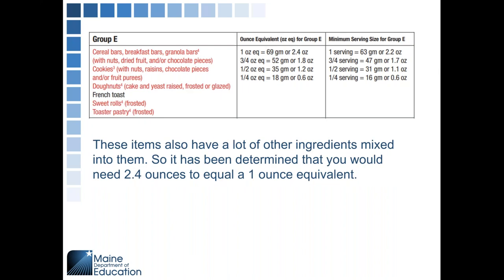Group E is next. These are cereal bars, breakfast bars, or granola bars that include nuts, dried fruit, or chocolate pieces. Also included are some cookies, some donuts if they are yeast-raised or frosted or glazed, French toast, and any sweet rolls or toaster pastries that are frosted. Because even more items are added to these, you need 2.4 ounces to equal a one ounce equivalent grain.